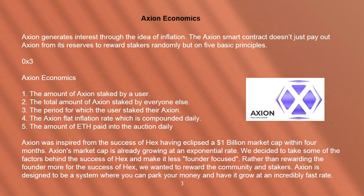Axion generates interest through the idea of inflation. The Axion smart contract pays out Axion based on 5 basic principles: 1) the amount of Axion staked by a user; 2) the total amount of Axion staked by everyone else; 3) the period for which the user staked their Axion; 4) the Axion flat inflation rate, compounded daily; and 5) the amount of ETH paid into the auction daily.